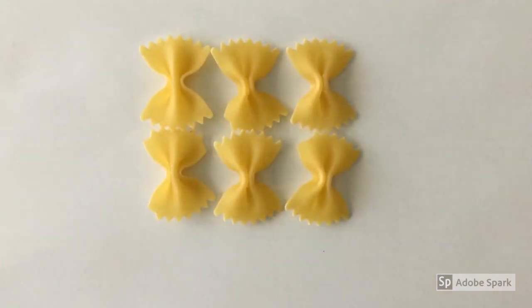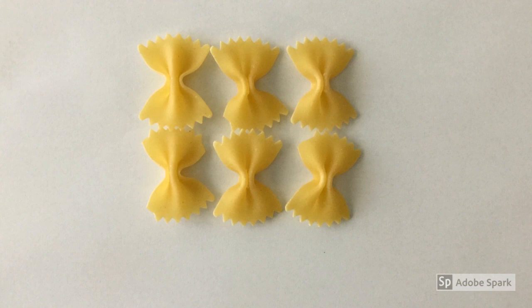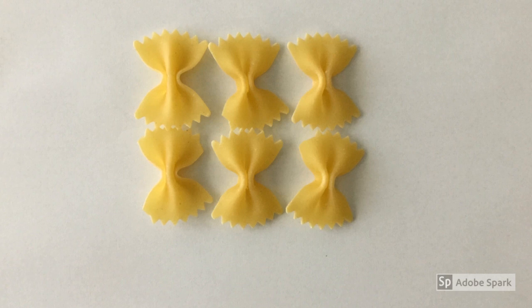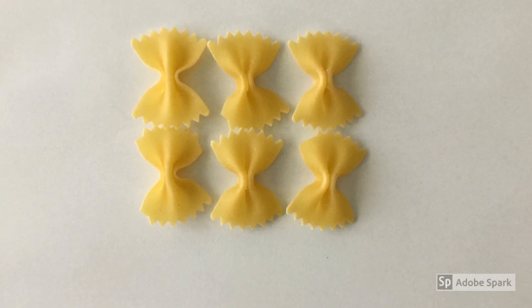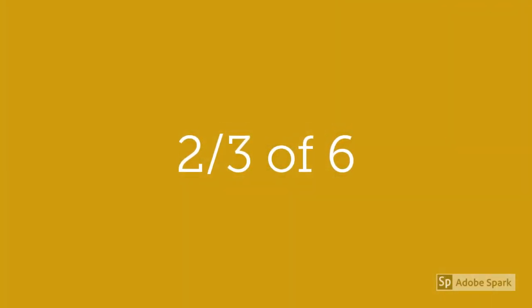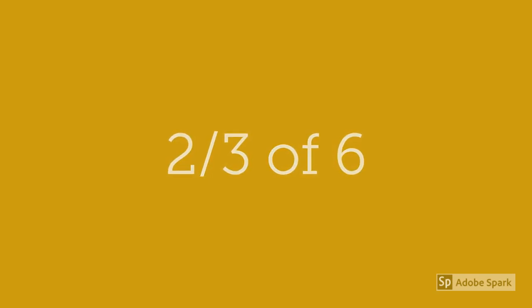Let's try it again. There are six pieces of pasta on the table: 1, 2, 3, 4, 5, 6. Mr. Daniele eats two-thirds of this pasta. How many pasta pieces has he eaten?